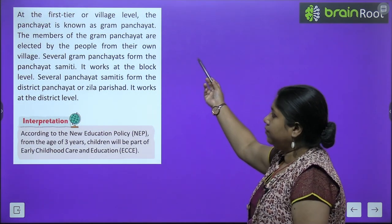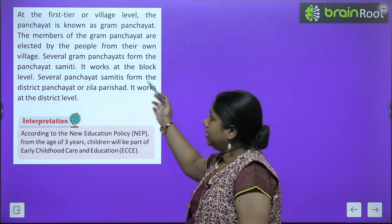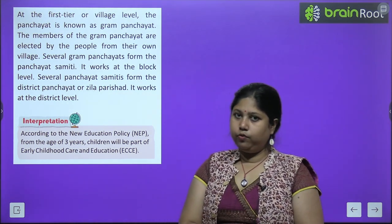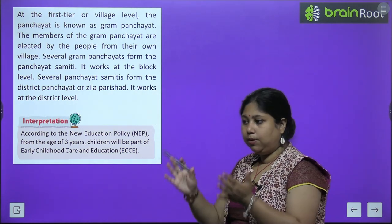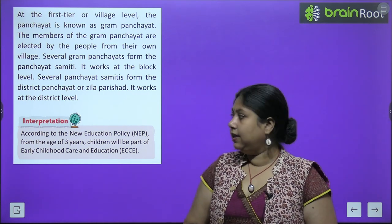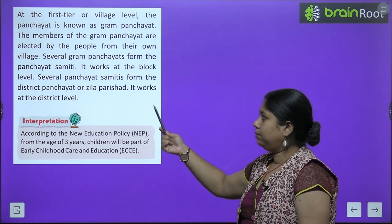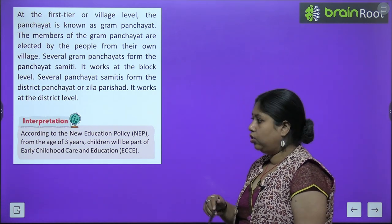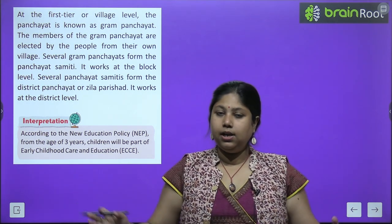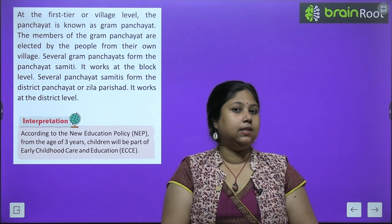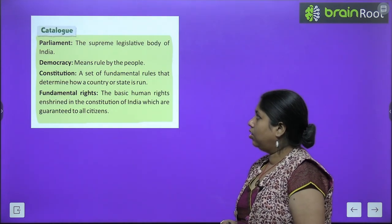At the first tier is the village level — the Gram Panchayat — whose members are elected by the people of the village through voting. Several Gram Panchayats together form a Panchayat Samiti, which works at the block level. Several Panchayat Samitis together form the District Panchayat or Jila Parishad, which operates at the district level.